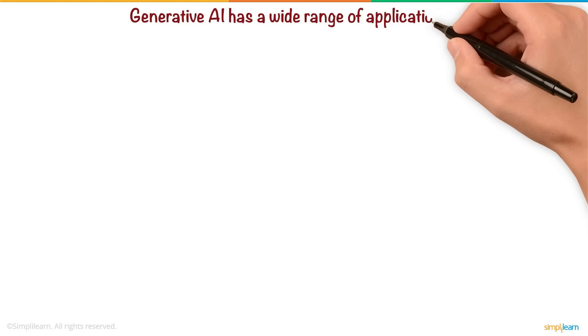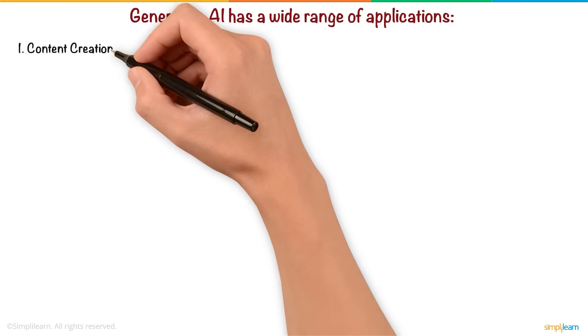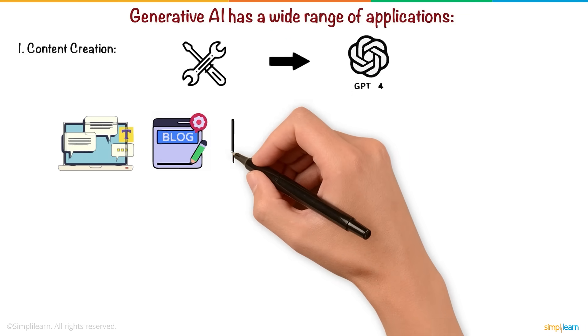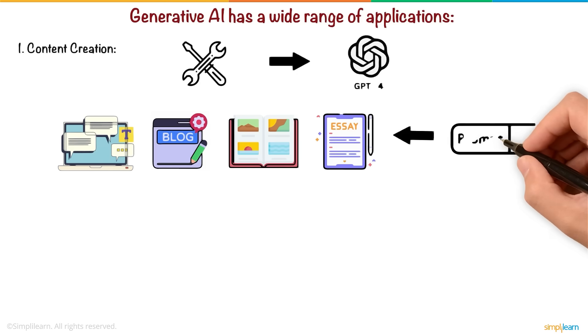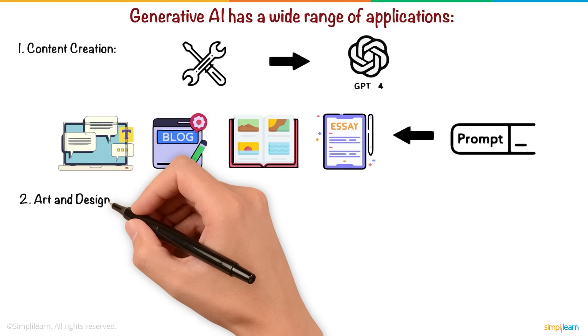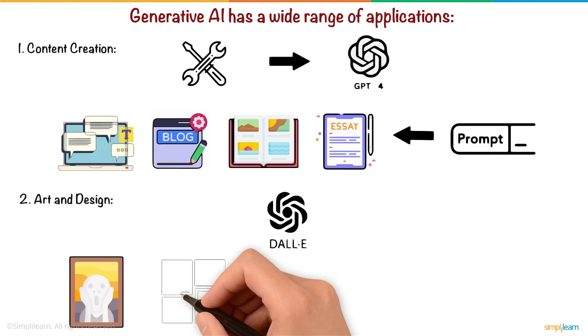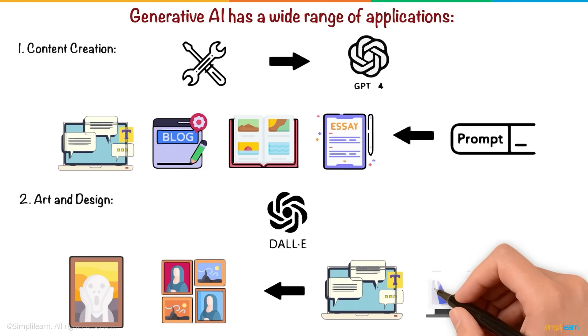Generative AI has a wide range of applications. Content creation: Tools like GPT-4 generate text, blog posts, stories, and essays from simple prompts. Art and Design: AI models such as DALL-E generate unique images and designs based on text descriptions, transforming creativity in art.